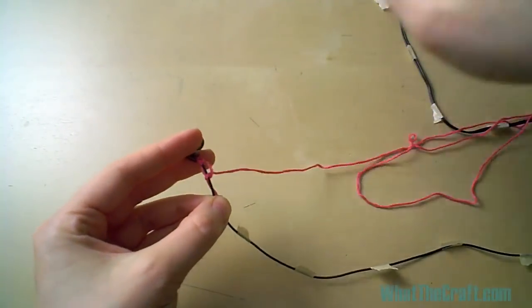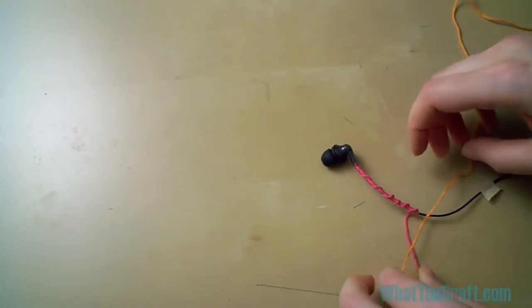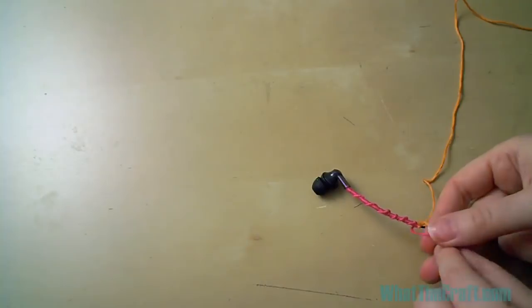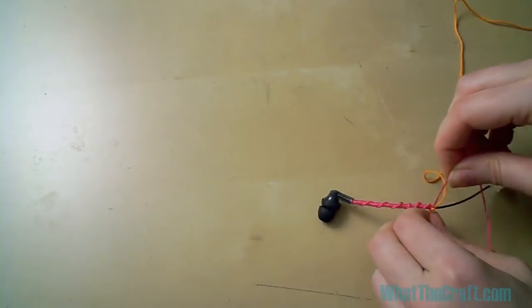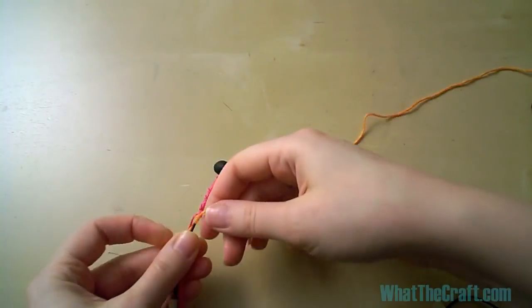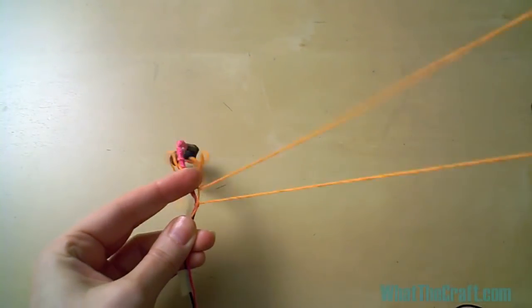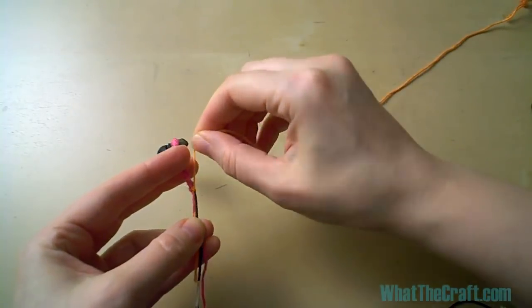Once you hit your first mark, it's time to stop and grab your next thread color. Tie the new thread, slide it up, and then loop the new thread around both the cord and the old thread and the new thread tail. If you wind up with a little gap between the two colors, you can pull on the thread tails and snug everything up.